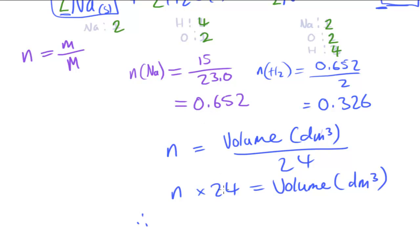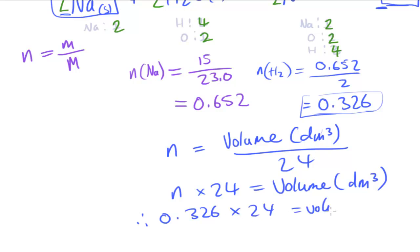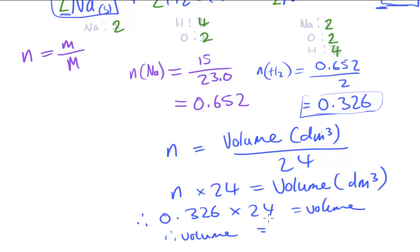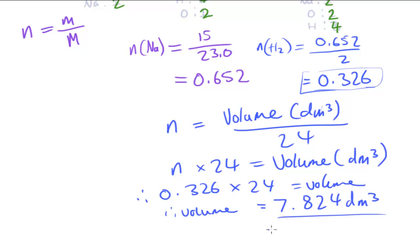Therefore, volume = 0.326 × 24 = 7.824 dm³. The volume occupied by this number of moles of hydrogen gas is 7.824 dm³, and to three significant figures that would be 7.82 dm³. That's how we work out the volume of a gas from the mass of a reactant.